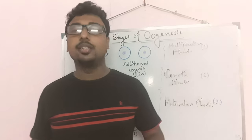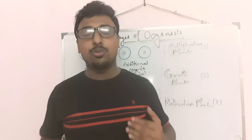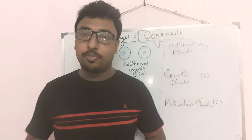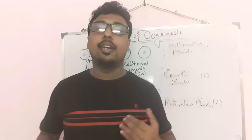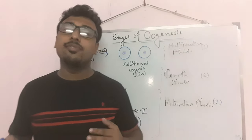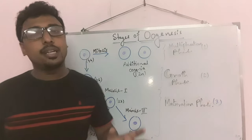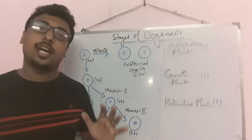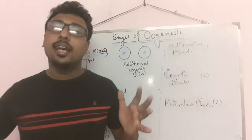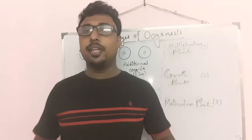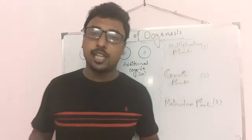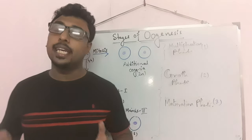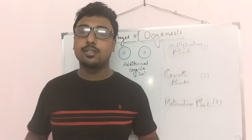The production or formation of ova within the ovary is called oogenesis. In the human body generally, hormonal secretion and other reproductive and psychological changes start in puberty. However, the oogenesis process starts in the female body when it is still in the fetus — that is the multiplication phase. The growth phase of oogenesis starts in adolescence or puberty. The location of oogenesis is the ovary.